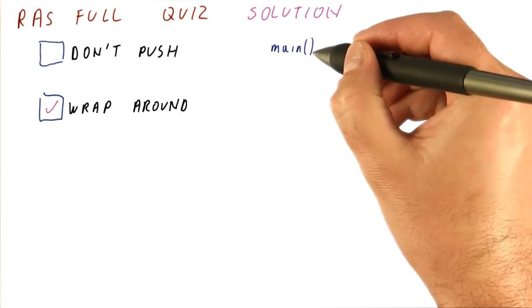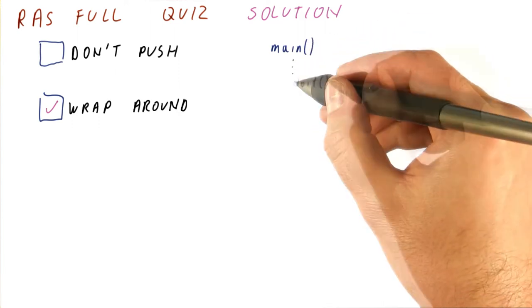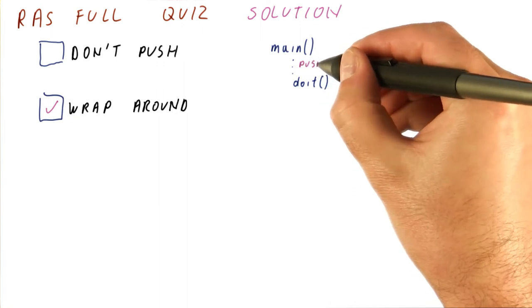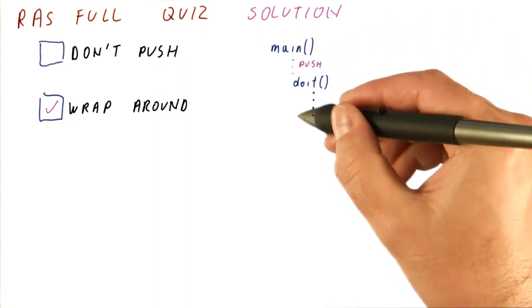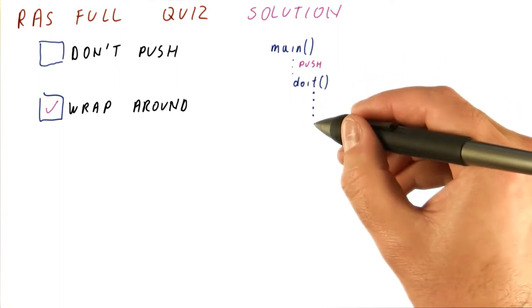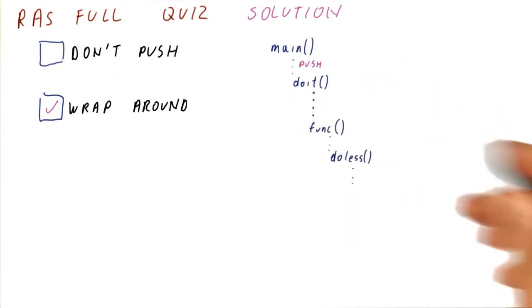We have the main function that executes for a while, then calls some other function. This results in pushing something onto the RAS. Our high level function here will do a lot of work, occasionally calling other functions and so on.